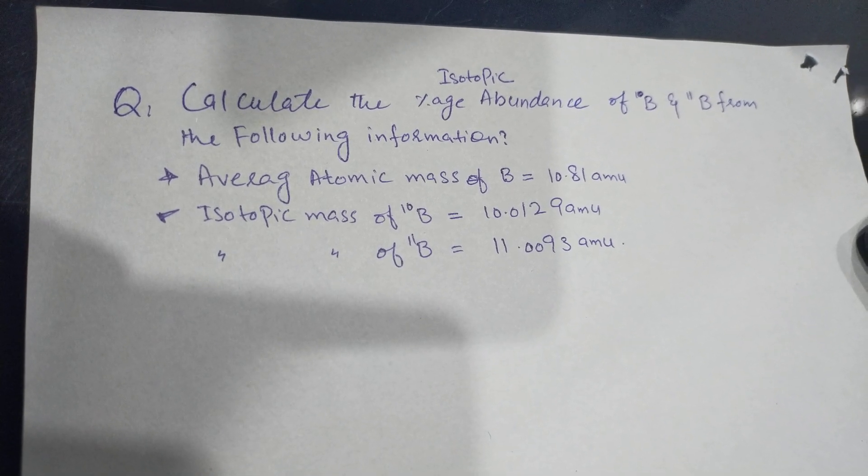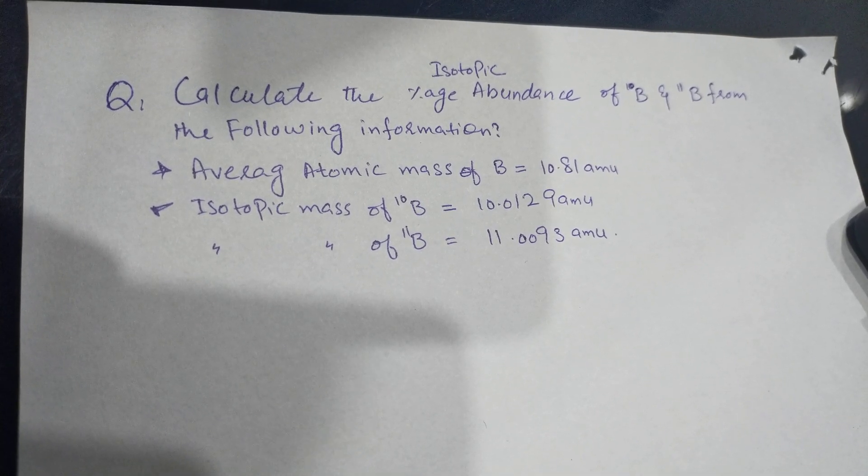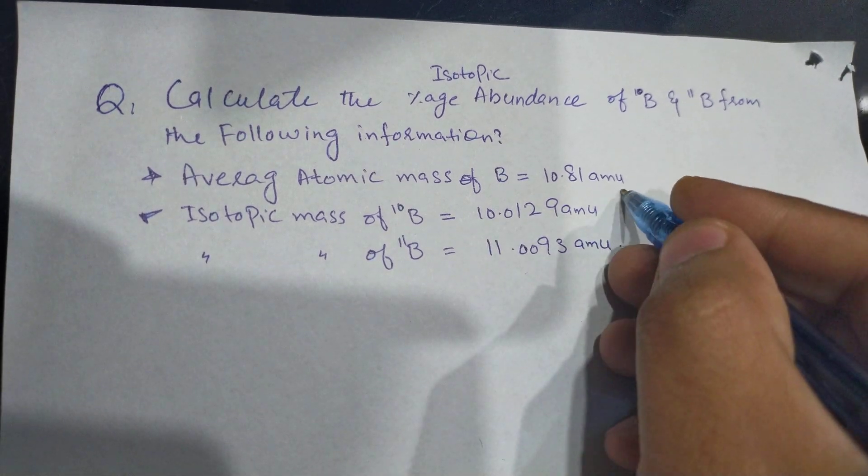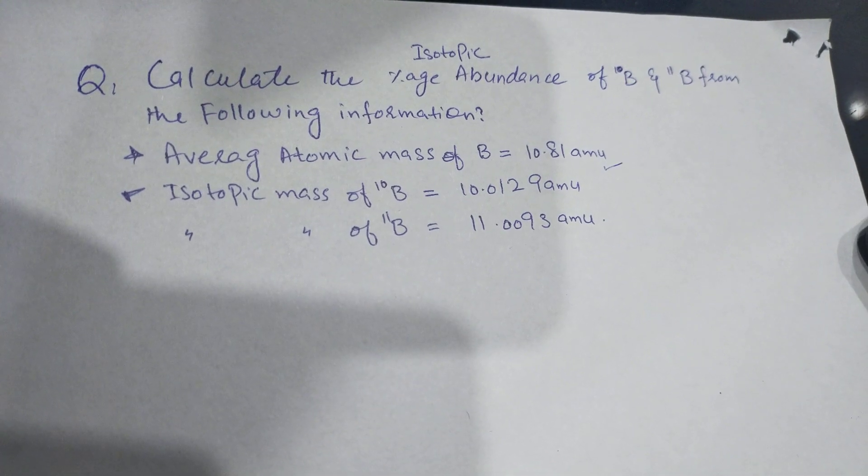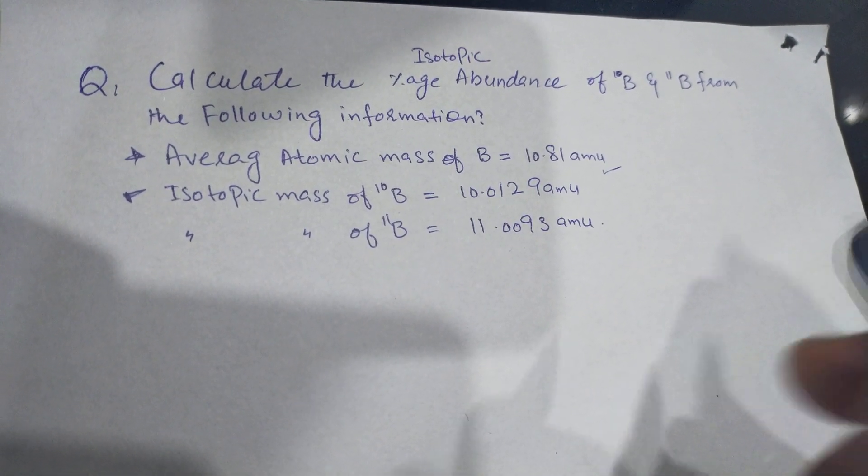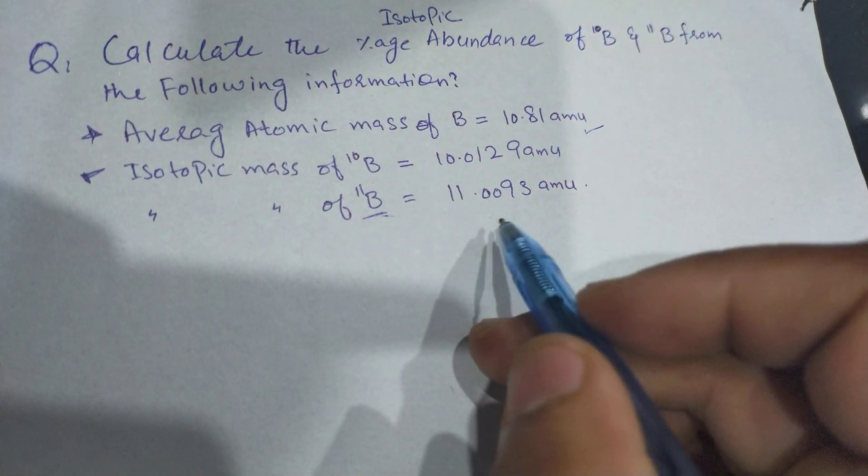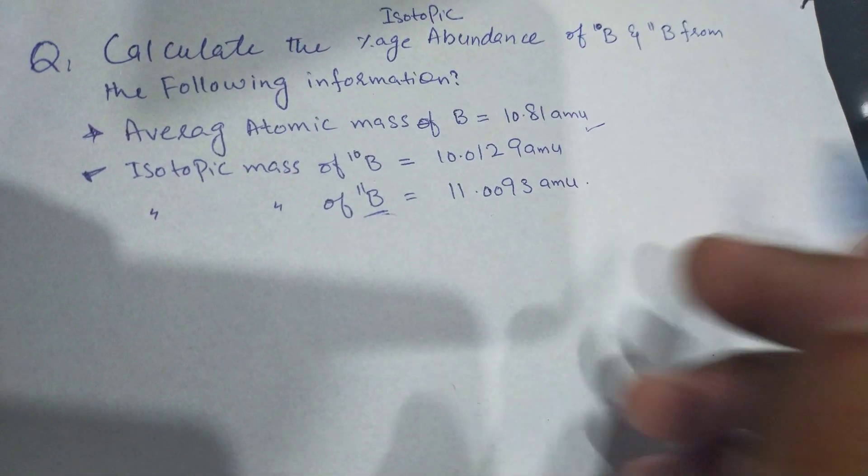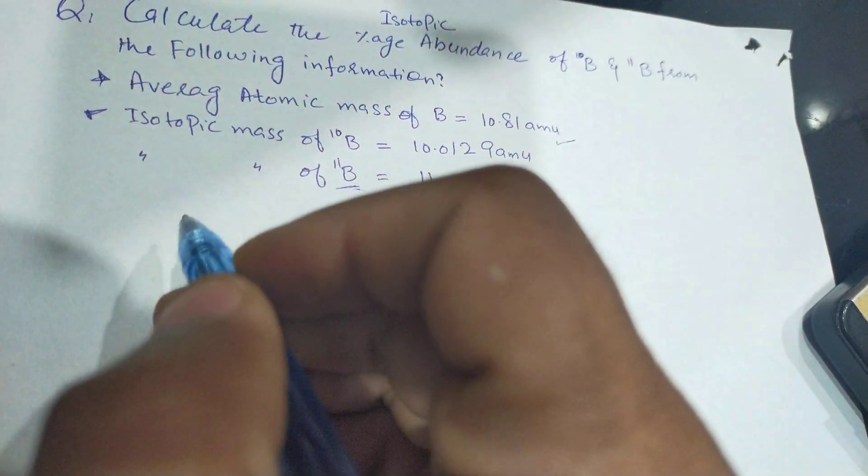We have given the following information: Average Atomic Mass of Boron which is 10.81 AMU (Atomic Mass Unit). Atomic Mass of Boron-10 isotope is 10.0129 AMU. Atomic Mass of Boron-11 isotope is 11.0093 AMU.